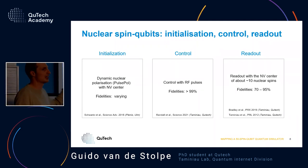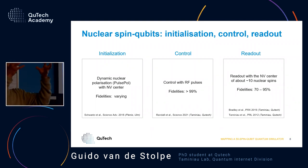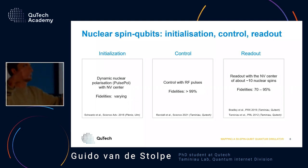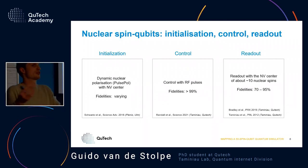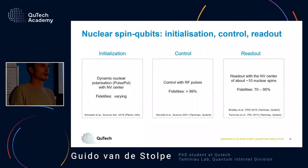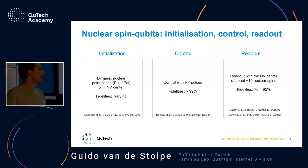For initialization, we use a protocol where we polarize the NV center with light and then let that polarization diffuse into the carbon network, so they get polarization from the NV center and we can initialize the carbon spins to point up at the start of our experiment. This doesn't work equally well for all carbon spins, but we can have some degree of polarization. For control, we can apply RF pulses with a typical fidelity of 99%.